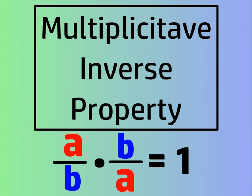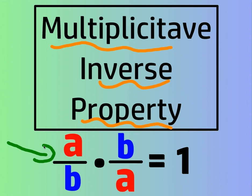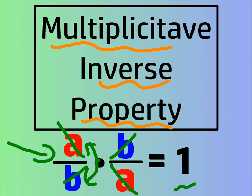This is the multiplicative inverse property. Before we looked at whole numbers multiplied by 1 over that whole number, but it also works for fractions. If we start with a over b and flip it and multiply by b over a, we end up with 1. Some people see the a's on top and bottom cancel, and the b's on top and bottom cancel — that's called cross multiplication. But in general, it works because if you take a fraction and multiply it by its flipped version, it will always give you 1 back.